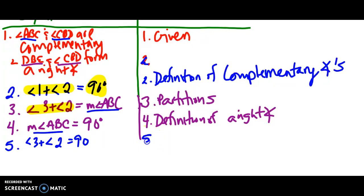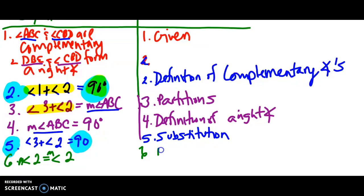Now what do I know? I have two equations - this equation and this equation, both of which equal 90 degrees. We have two pairs of angles that are complementary, and angle 2 is in both. So we can say that the measure of angle 2 is equal to the measure of angle 2. That is reflexive.